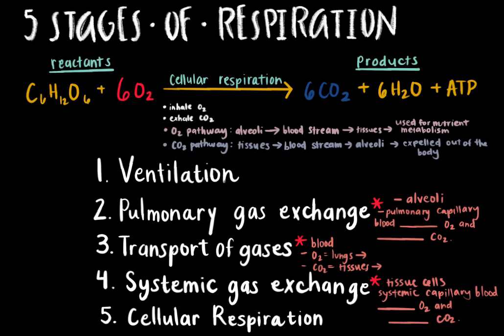Before we discuss gas exchange, let's review the cellular respiration equation as well as the five major processes involved in respiration. The reactants are glucose and oxygen, and the products are carbon dioxide, water, and ATP.